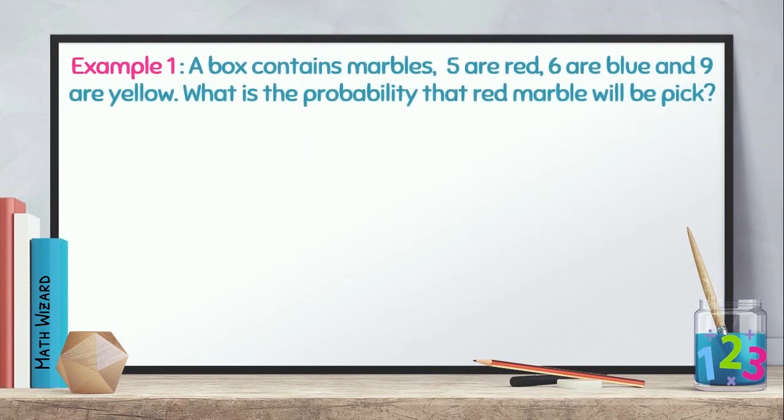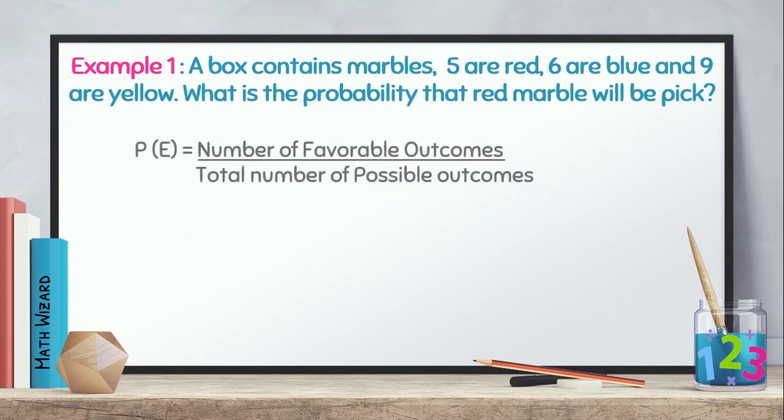So, move on tayo sa first example. Ano yung aim natin? We need to identify the probability of picking a red marble. First, i-identify natin. How many red marbles are there? Based from the problem, there are 5 red marbles. So, we have yung number of favorable outcomes natin is 5.